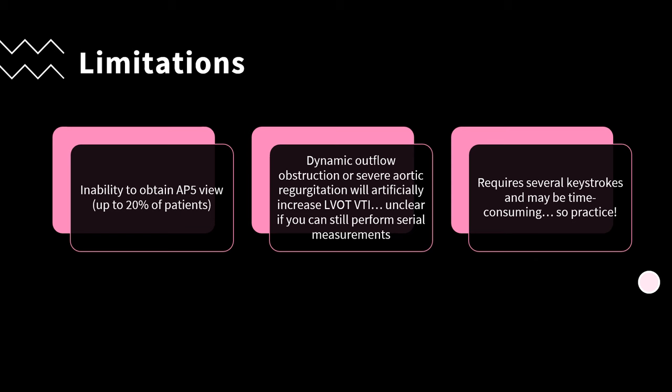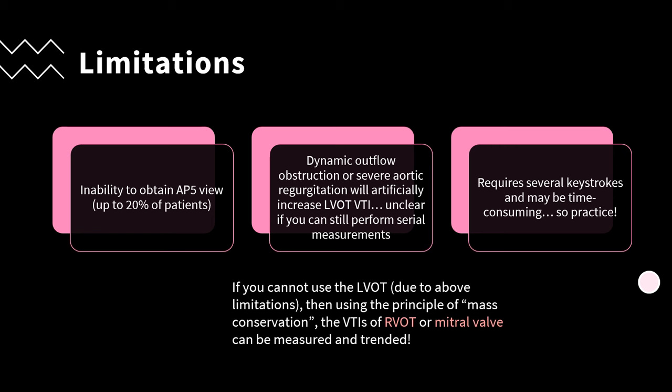There are a few notable limitations to this technique. Most commonly, it will be the inability to obtain the apical 5-chamber view. If your patient has a dynamic outflow obstruction or severe AR, this will artificially increase your LVOT VTI, and it's unclear if the technique can still be used. It also requires several keystrokes and can be time-consuming, so make sure to practice. If you can't use the LVOT due to these limitations, you can use the principle of mass conservation and measure the VTIs of the right ventricular outflow tract or mitral valve, trending them similarly. Mass conservation means blood flow through each valve must be the same, assuming no valvular regurgitation or intracardiac shunting.